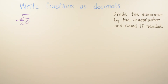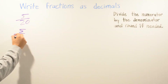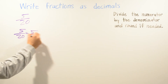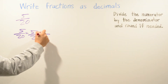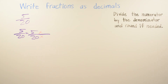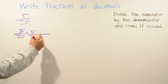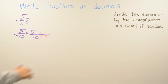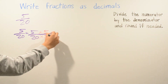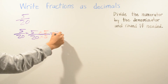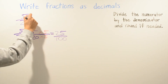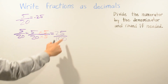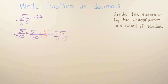For the multiplication method, we figure out what number to multiply twenty by to get one hundred — twenty times five equals one hundred. Whatever you do on the bottom, you also do on the top. So five times five is twenty-five and twenty times five is one hundred, giving us twenty-five over one hundred. The decimal is 0.25.